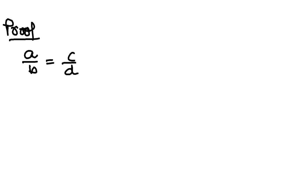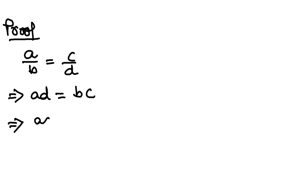What is given here: a/b = c/d. If I do cross multiplication, ad = bc. Now I will subtract both left and right side from ac, so you will have ac - ad = ac - bc.